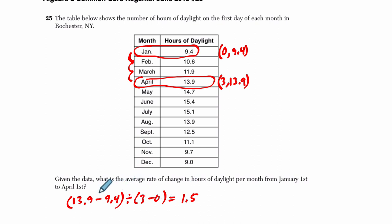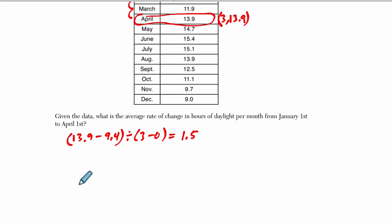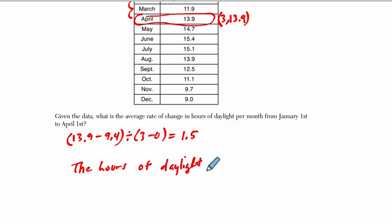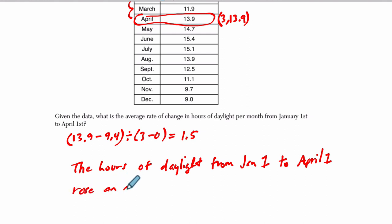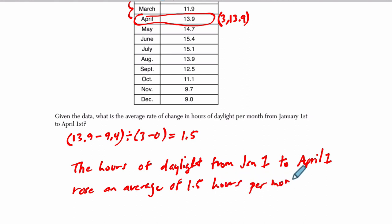It also says to interpret what this means in the context of the problem. I would write something like this: the hours of daylight from January 1st to April 1st — state that interval, that domain — increased an average of 1.5 hours per month. Make sure you mention daylight, make sure you mention the domain, and that you're dealing with an average per month, which is essentially our slope here.